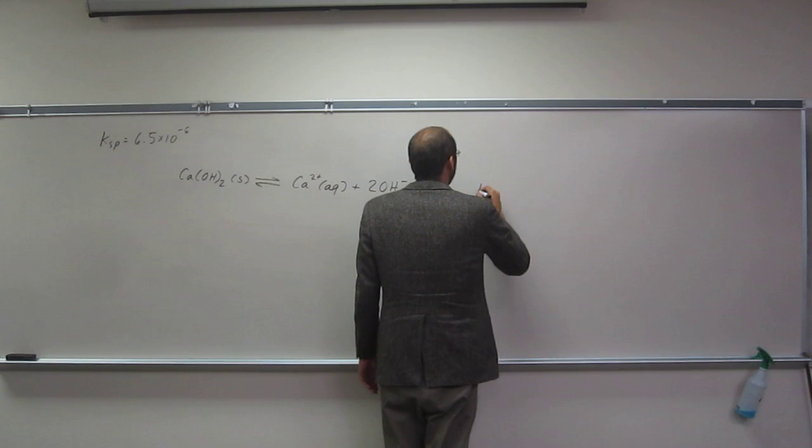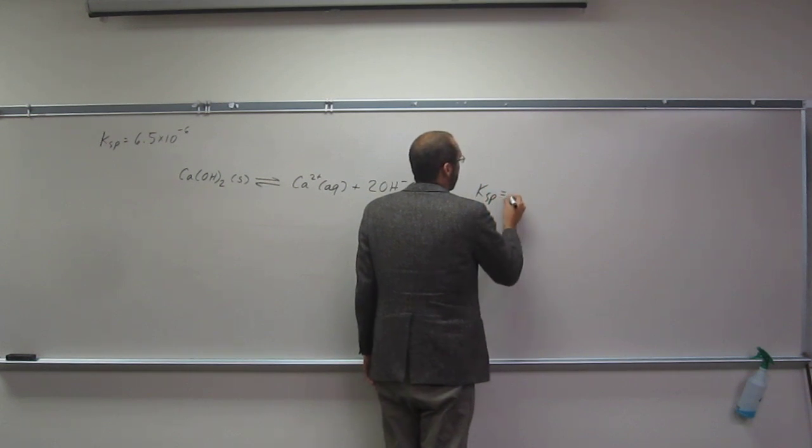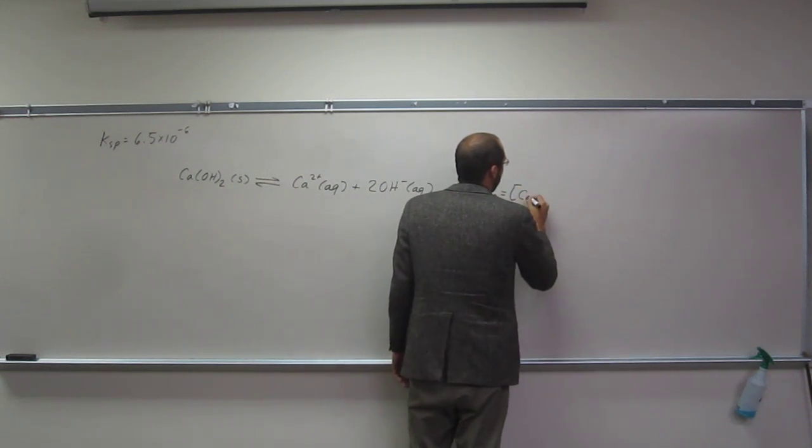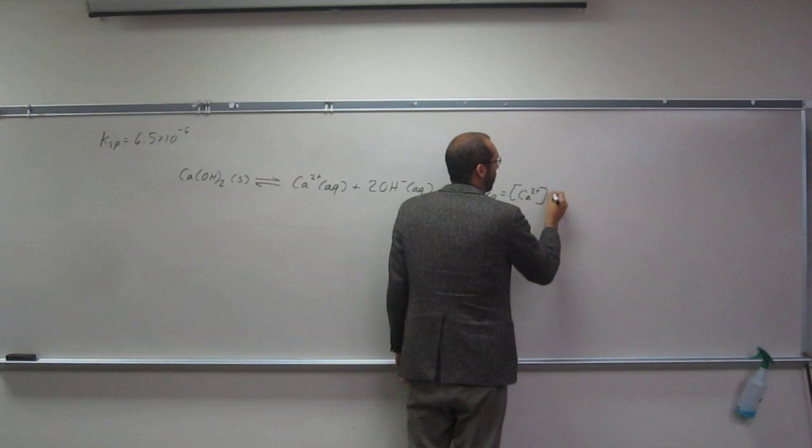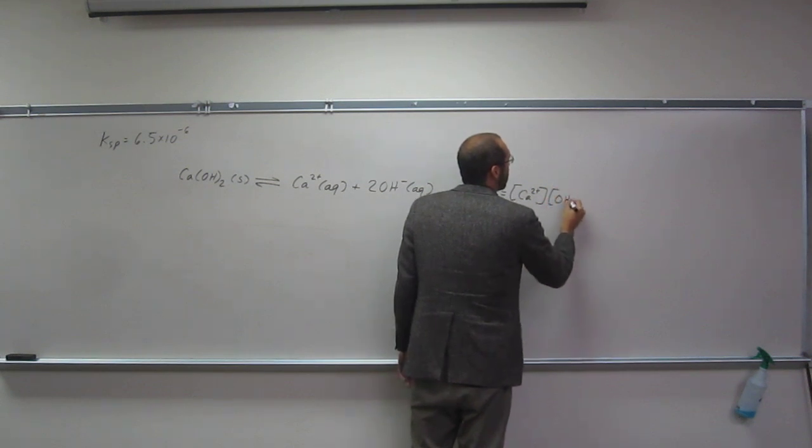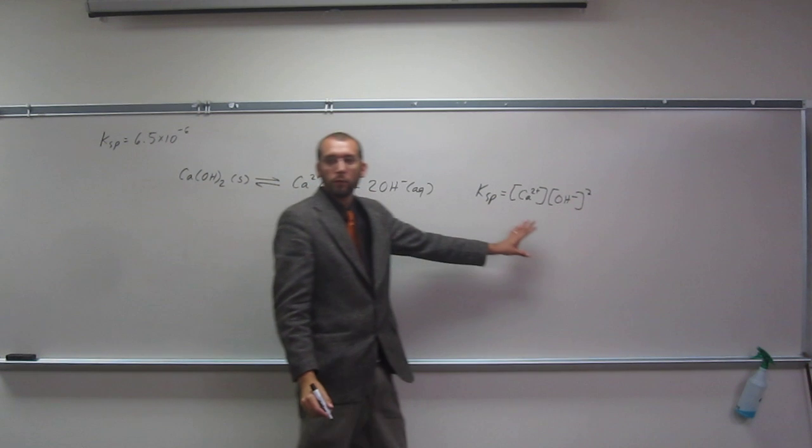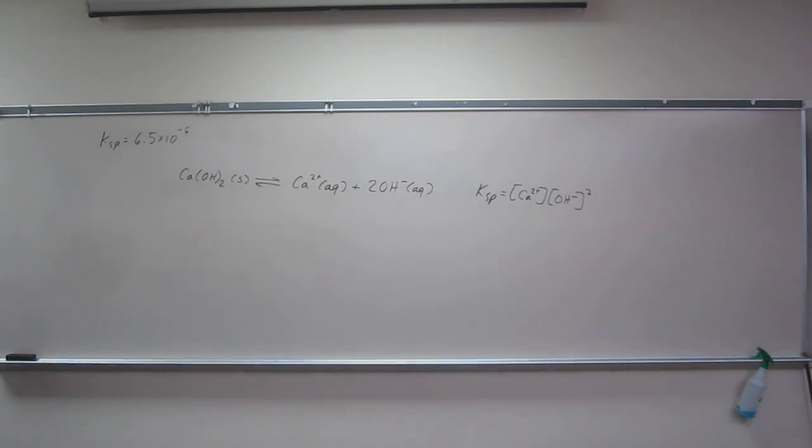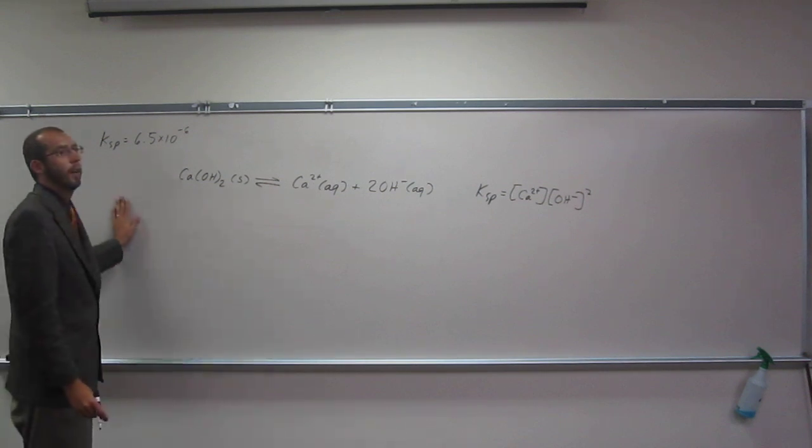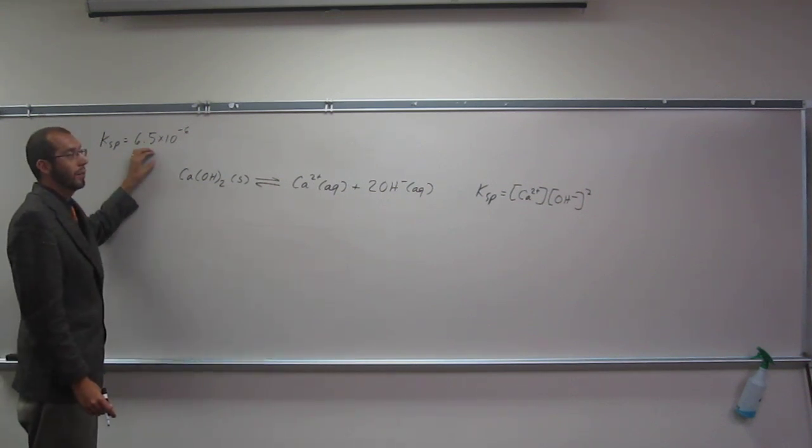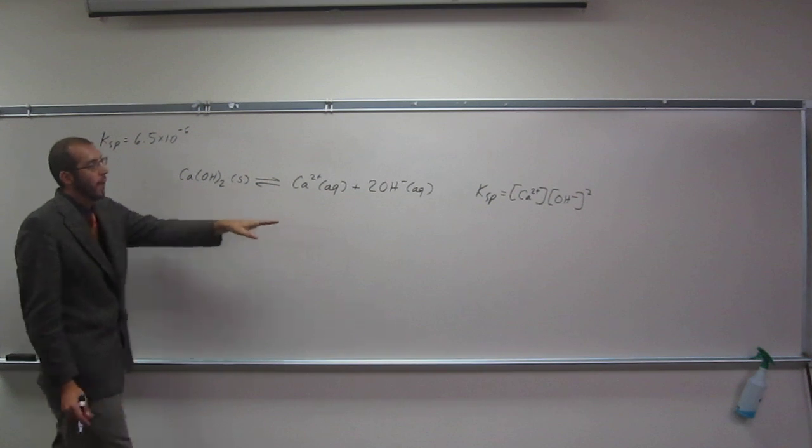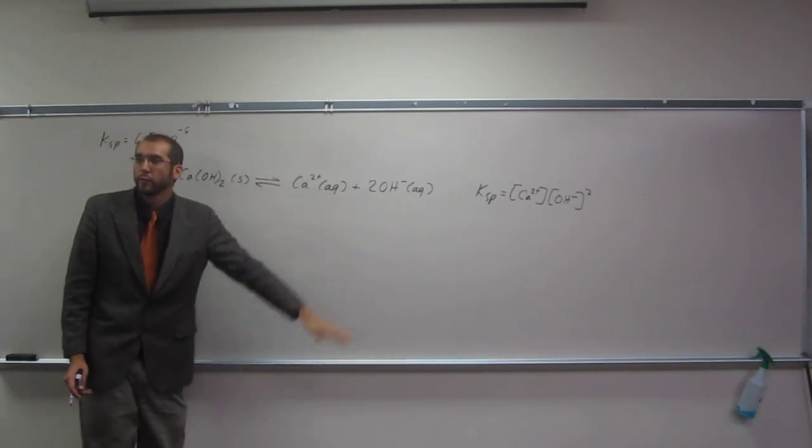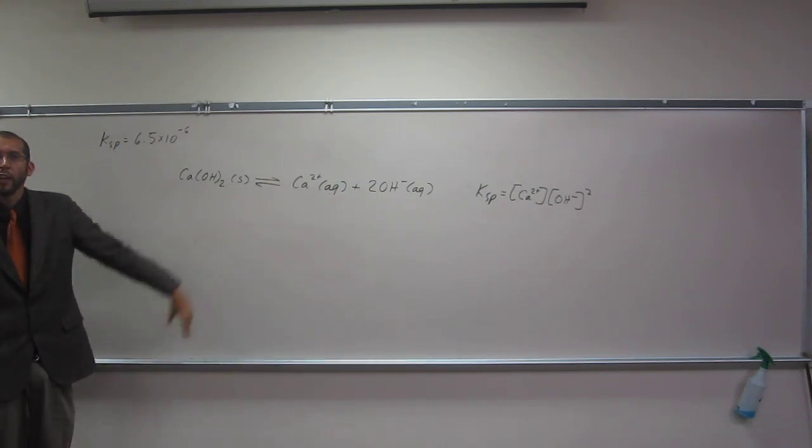So Ksp of this is going to be Ca2+ times OH- squared, right? Do you remember your squares? So that equals Ksp. Well, how do we figure out what those concentrations are? Can anybody venture a guess?